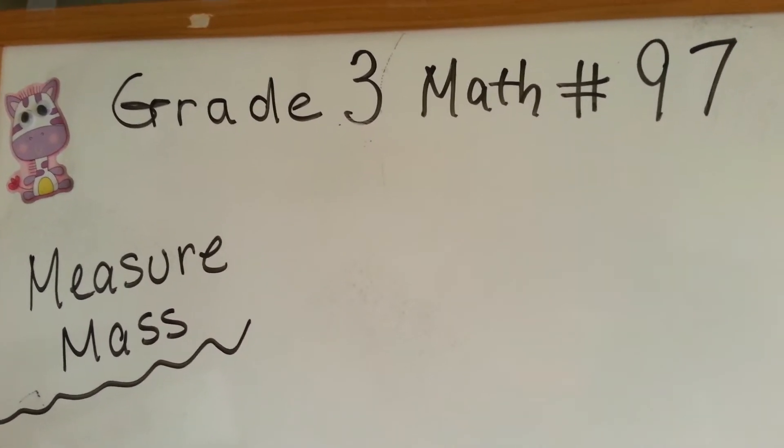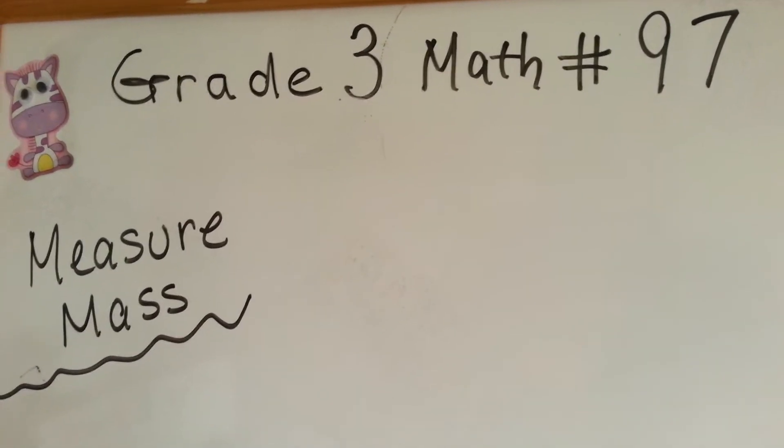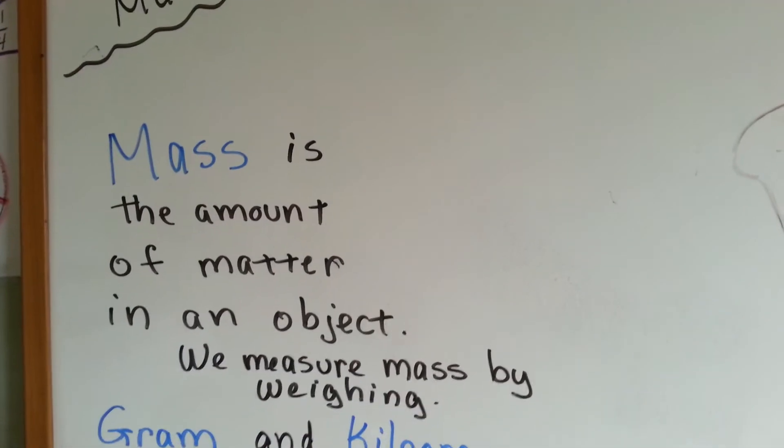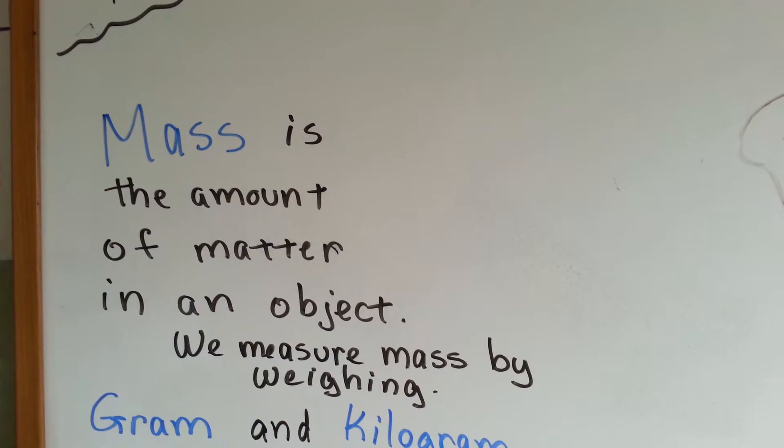Grade 3 math, number 97, measure mass. Mass is the amount of matter in an object. We measure mass by weighing.